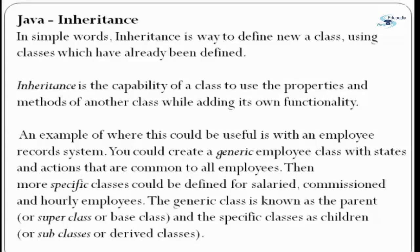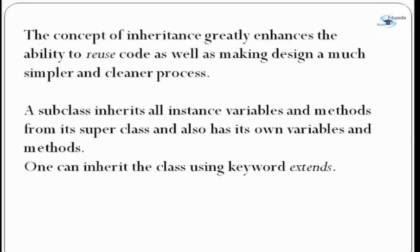An example of where this could be useful is with an employee record system. You could create a generic employee class with the states and actions that are common to all employees. Then more specific classes could be defined for salaried employees, commissioned employees, and RA employees. The generic class is also known as parent, super, or base class, and specific classes are known as children, subclasses, or derived classes. The concept of inheritance greatly enhances the ability to reuse code as well as making design a much simpler and cleaner process.